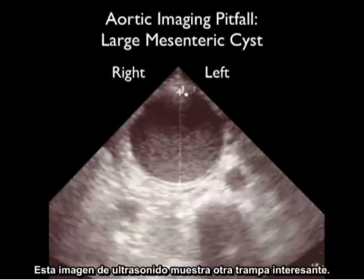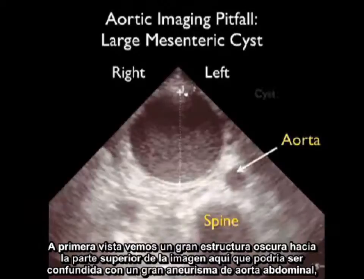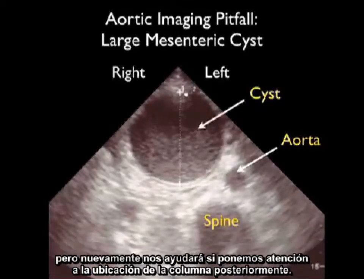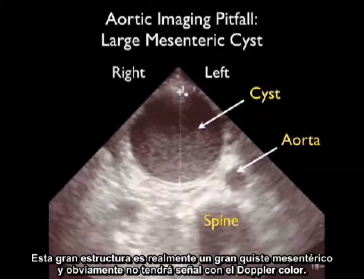This ultrasound image shows another interesting pitfall. At first glance, a very large dark structure at the top of the image could be mistaken for a large AAA. However, close attention to the spine posteriorly helps — notice the bone table of the spine, and just anterior to it, the aorta. This very large structure is actually a mesenteric cyst, which failed to demonstrate pulsations with color power Doppler.